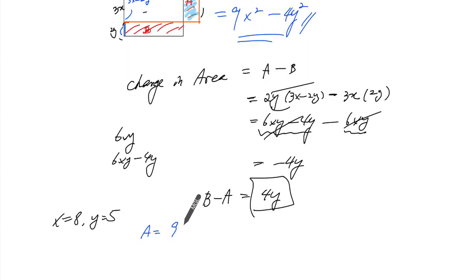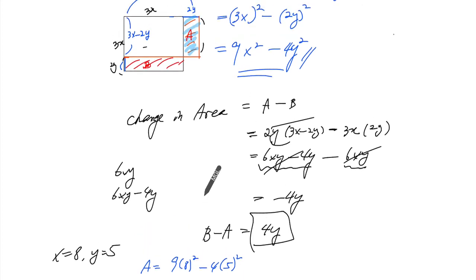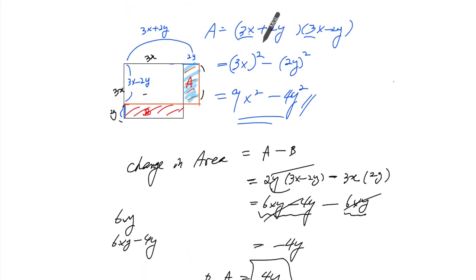So it's 9x squared minus 4y squared. For plugging in numbers, it's actually better to use this.